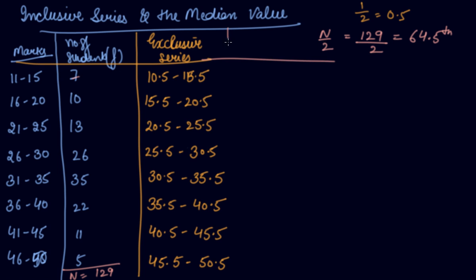Now we have to find out the cumulative frequency: 7, 7 plus 10 is 17, 17 plus 13 is 30, 30 plus 26 is 56, 56 plus 35 is 91, 91 plus 22 is 113, 113 plus 11 is 124, 124 plus 5 is 129.